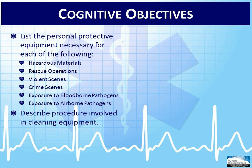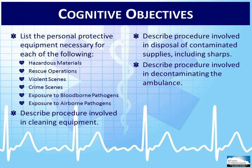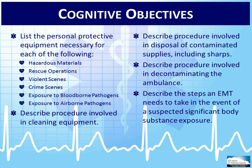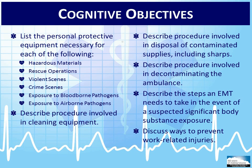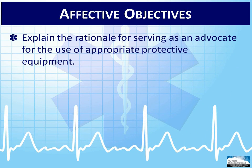Describe the procedure involved in cleaning equipment. Describe the procedure involved in disposal of contaminated supplies, including sharps. Describe the procedure involved in decontaminating the ambulance. Describe the steps an EMT needs to take in the event of a suspected significant body substance exposure. Discuss ways to prevent work-related injuries. You should also be able to explain the rationale for serving as an advocate for the use of appropriate protective equipment.